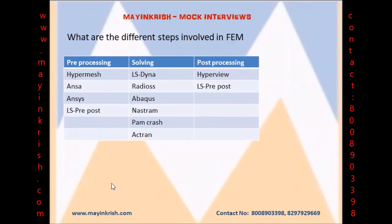Finite element analysis comprises pre-processing, solving, and post-processing phases. Pre-processing involves discretizing the part — i.e., meshing the components — and assigning thickness, materials, loads, boundary conditions, removing intersections, penetrations, screw connections, and spot welds. The best pre-processing tools are Hypermesh, ANSA, ANSYS, and LS Pre-POST.